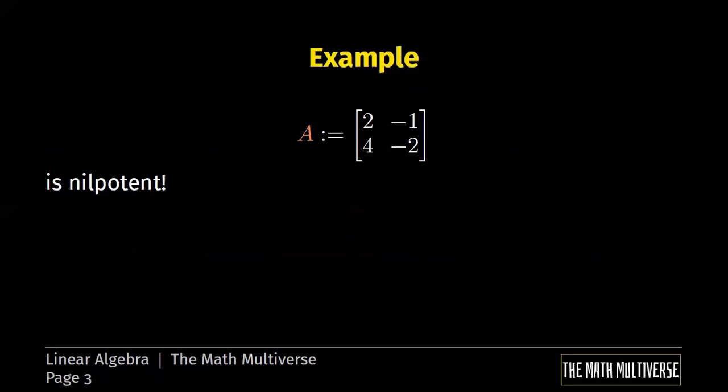Let's start with a very simple matrix, a 2 times 2 square matrix, whose entries are 2, minus 1, 4 and minus 2, as you see. I claim that this matrix is nilpotent.